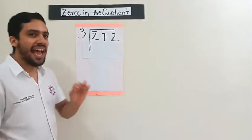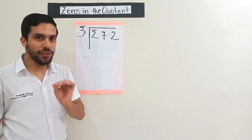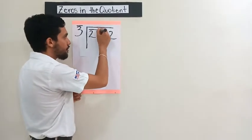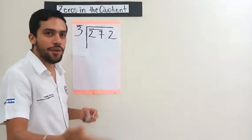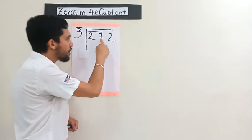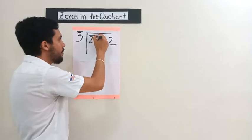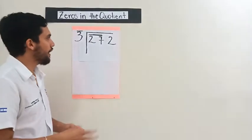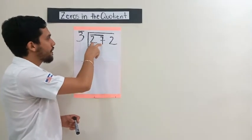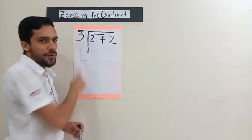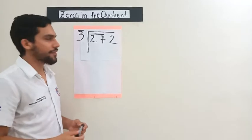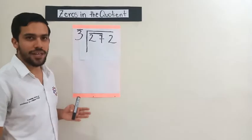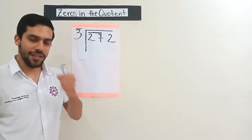So that's why, only at the beginning, remember that we need to take 2 digits. So instead of taking 2, we're going to take 27. 27 seems like a bigger number. Now we're going to compare 27 and 3. Obviously, 27 is greater than 3. Now in this case, you can start dividing.